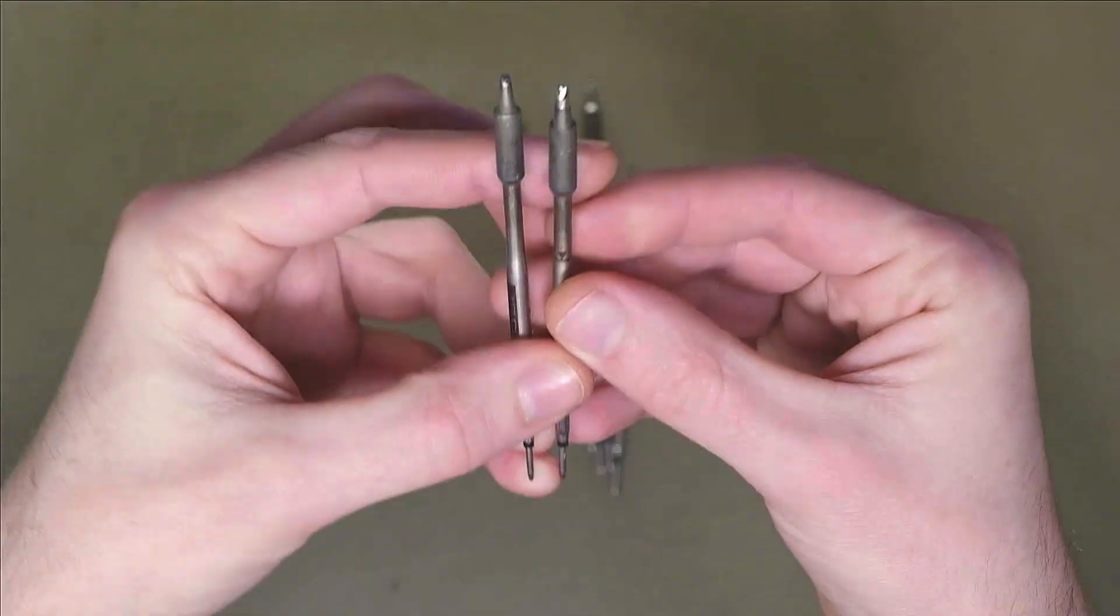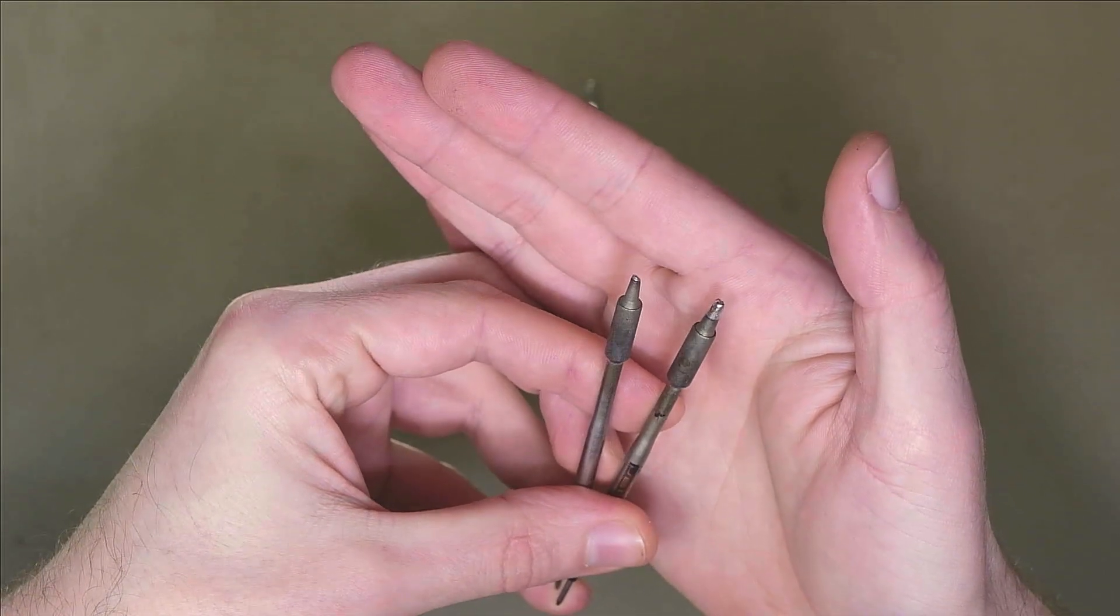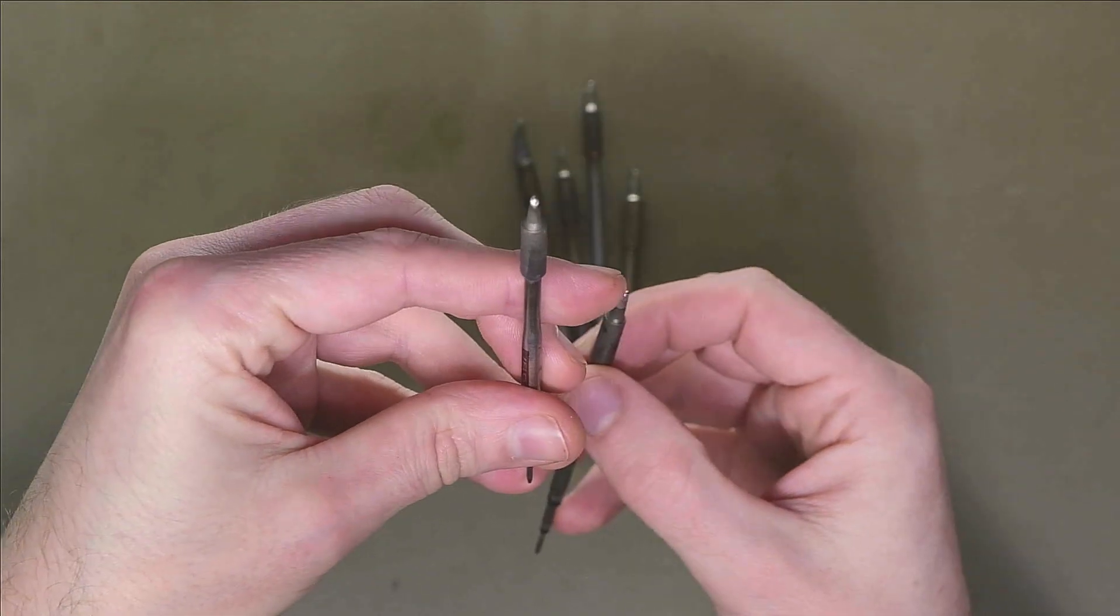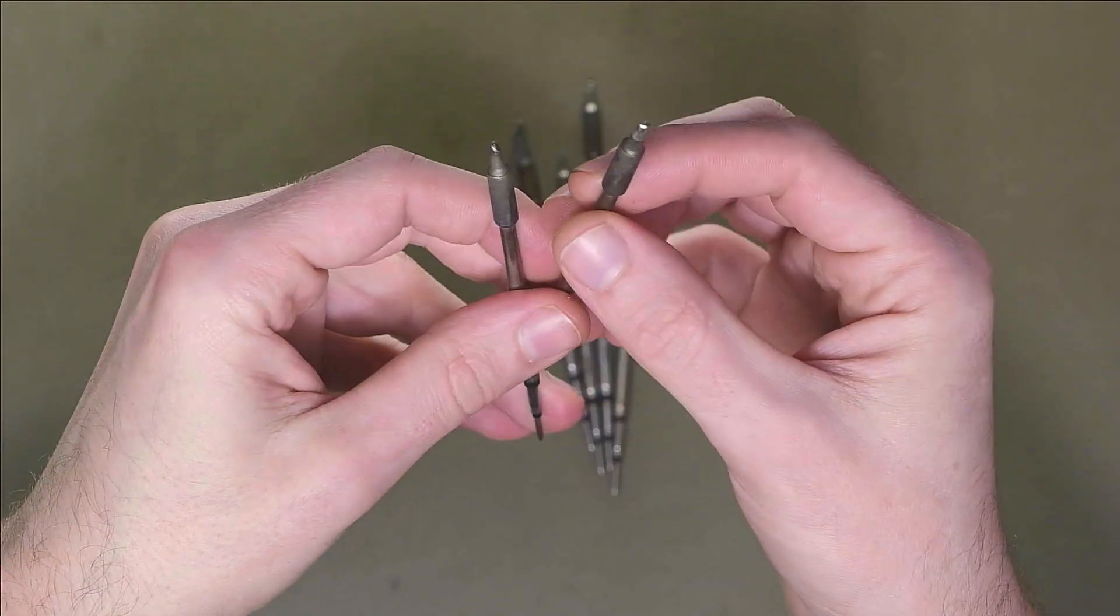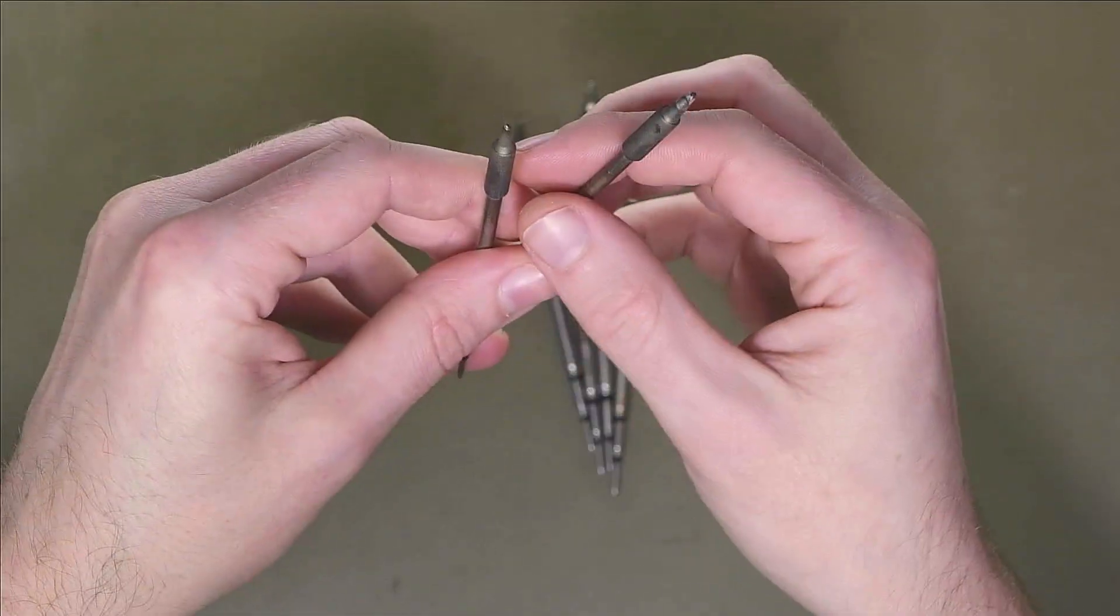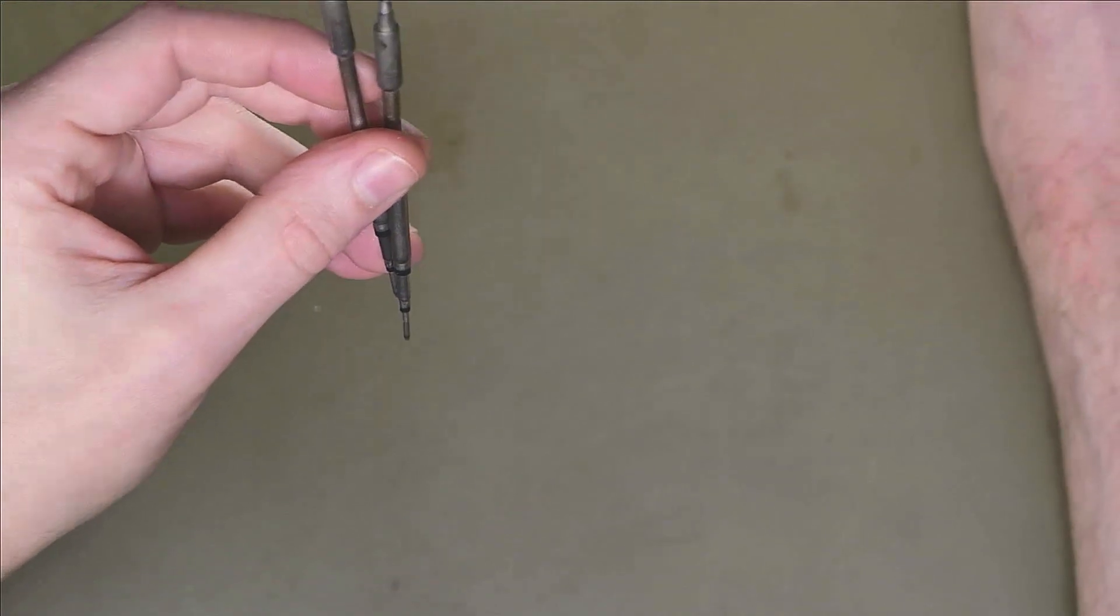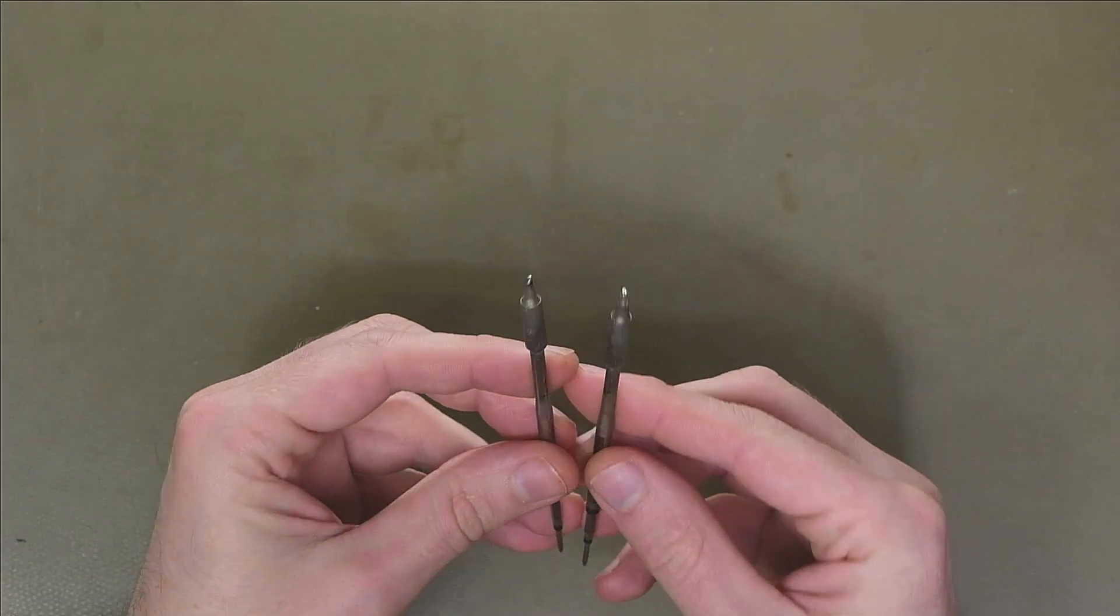They look very much alike on the camera, but one is a bevel tip and one is what I believe they call a chisel. These are my main tips. I use these all the time.